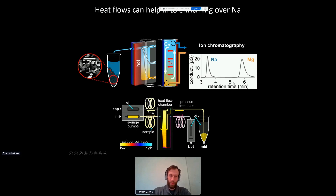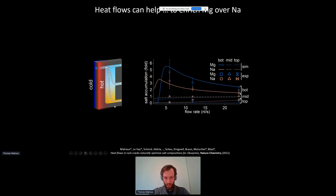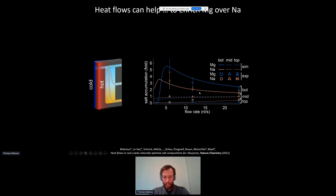Using different flow speeds through the heat flow chamber, where data points are measurements and lines are simulations, we find that both magnesium and sodium are accumulated in the bottom fraction. However, magnesium is accumulated up to 2.5-fold more strongly than sodium.